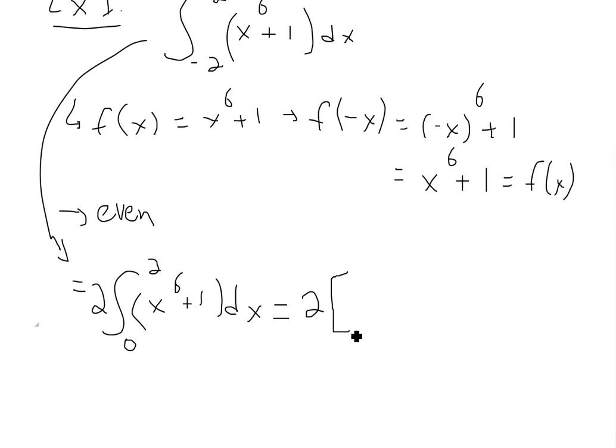So put a 2 in here. So now the anti-derivative or integral of x to the power of 6, that is just x to the 7, and then always divided by 7. If we take the derivative, this 7 goes down, and this cancels out.